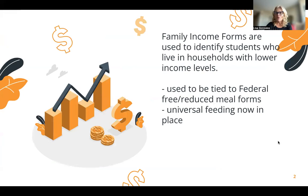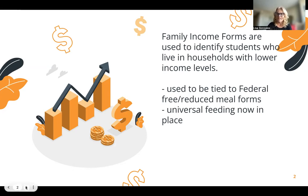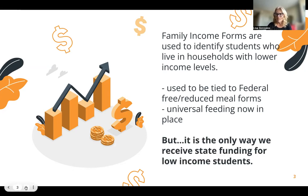Family income forms are used to identify students who come from families with lower household incomes. It used to be that these were tied to the federal free and reduced meal forms, but now that we have universal feeding — which means that we provide meals for all students — the state needs to have a way to collect information in order to give us specific funding that's always been intended for low-income students.